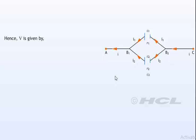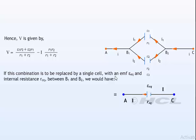Hence, V is given by V equals E1 R2 plus E2 R1 by R1 plus R2 minus I into R1 R2 by R1 plus R2. If this combination is to be replaced by a single cell with an EMF E equivalent and internal resistance R equivalent between B1 and B2, we would have V equals E equivalent minus I R equivalent.